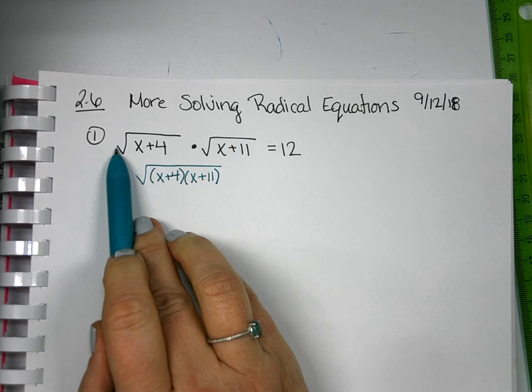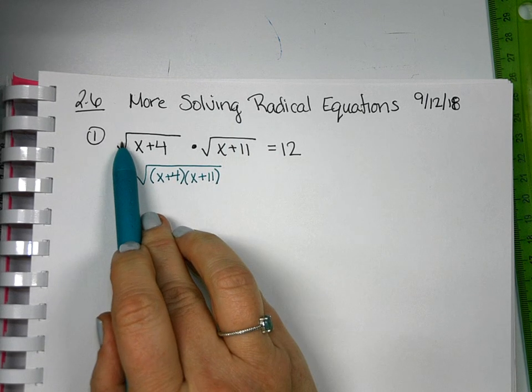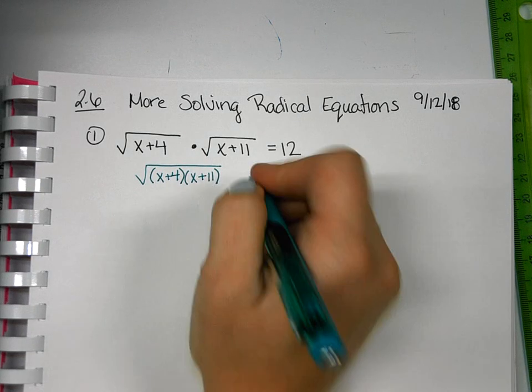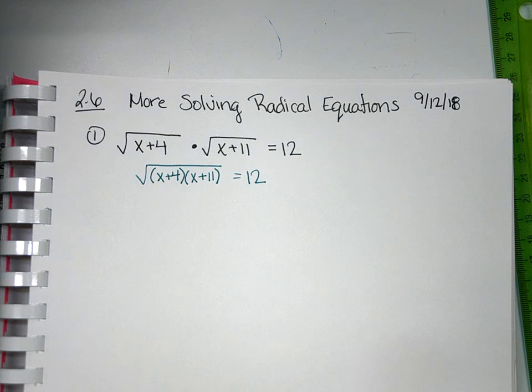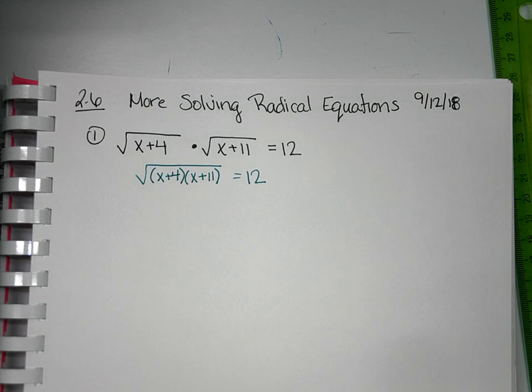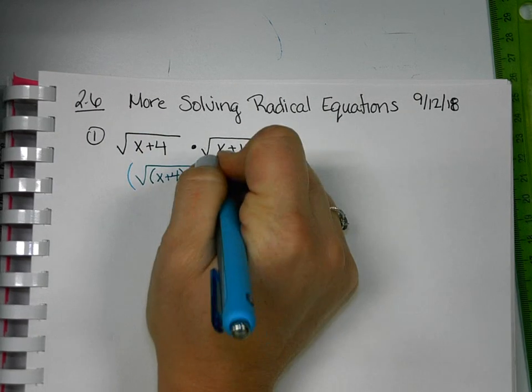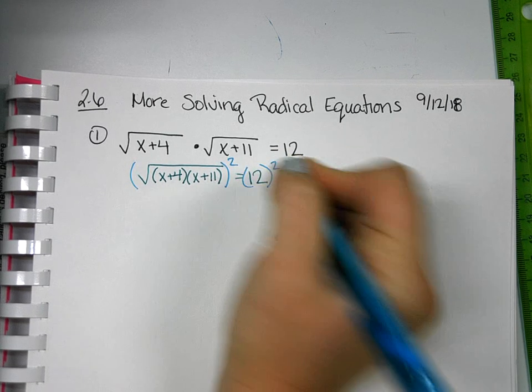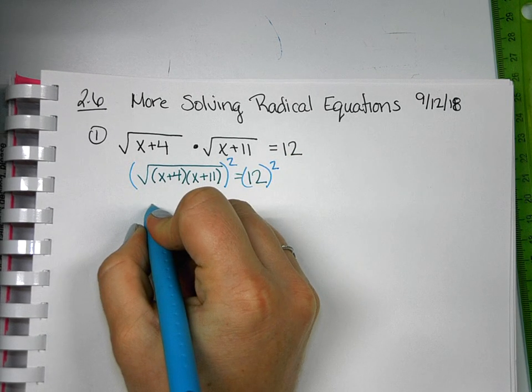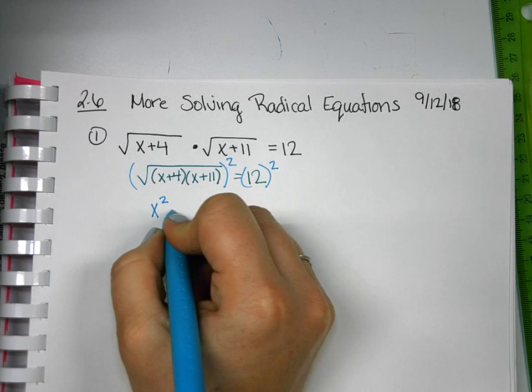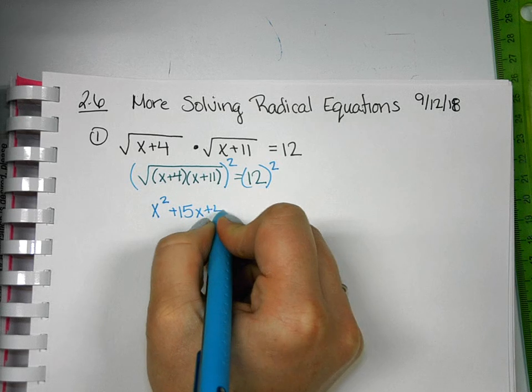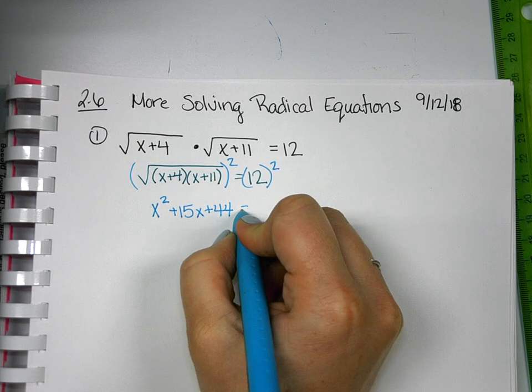But this only works when the index is the same. So if I go ahead and combine my two square roots into one radical, I've isolated the radical. I can square both sides to cancel out the radical, leaving me, I'm going to foil this out.